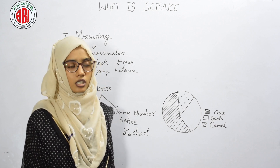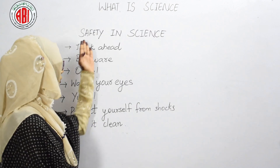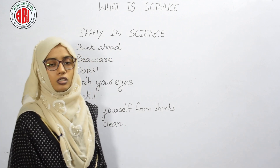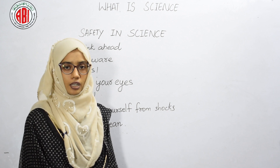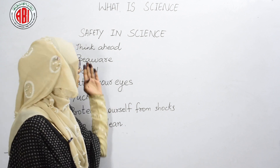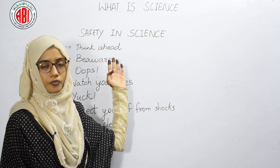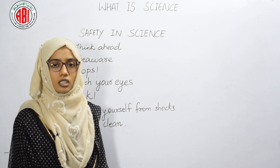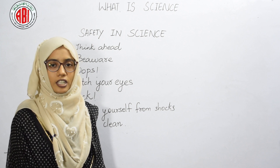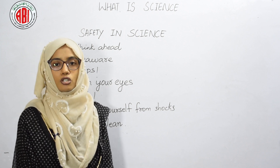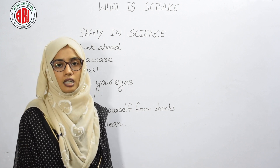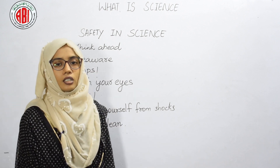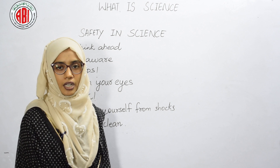Our next topic is safety in science. While doing an experiment, we should follow the safety rules in a scientific lab. The first rule is think ahead — this symbol represents that we need to study the steps to be followed during experimentation and should understand the safety symbols.